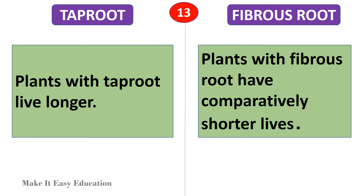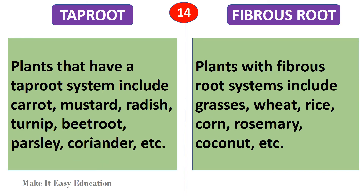Plants with taproot live longer. Plants with fibrous root have comparatively shorter lives.